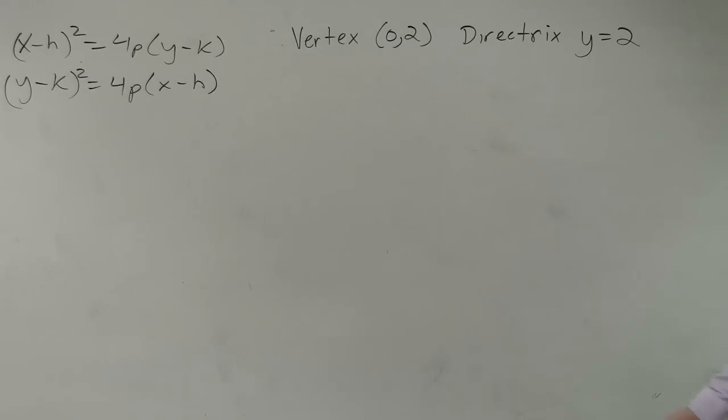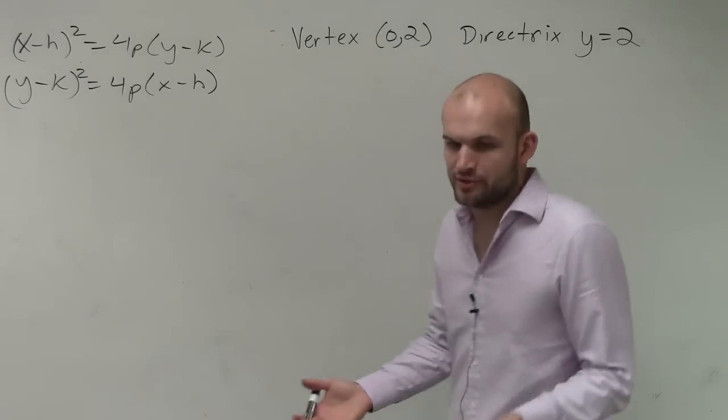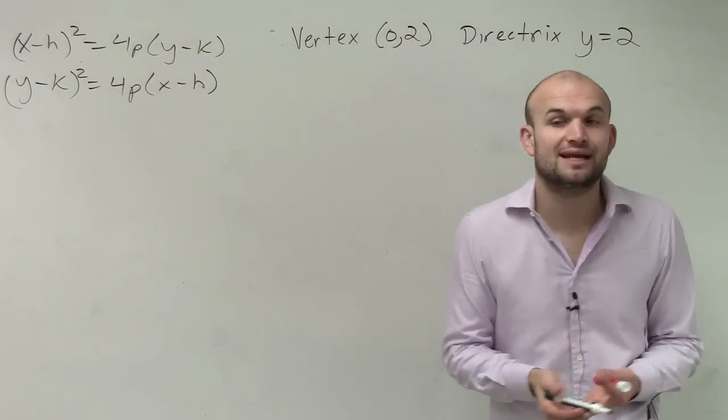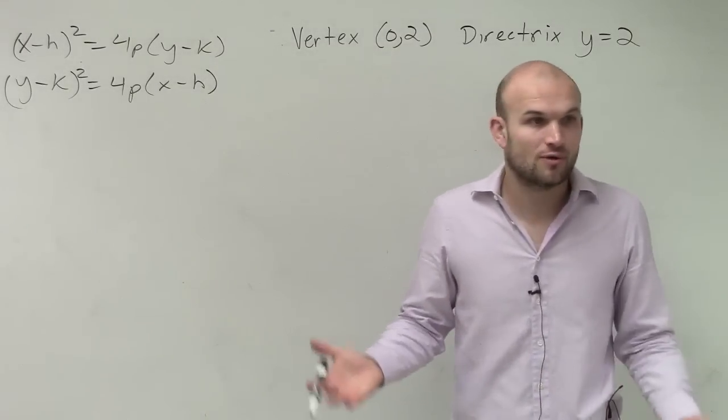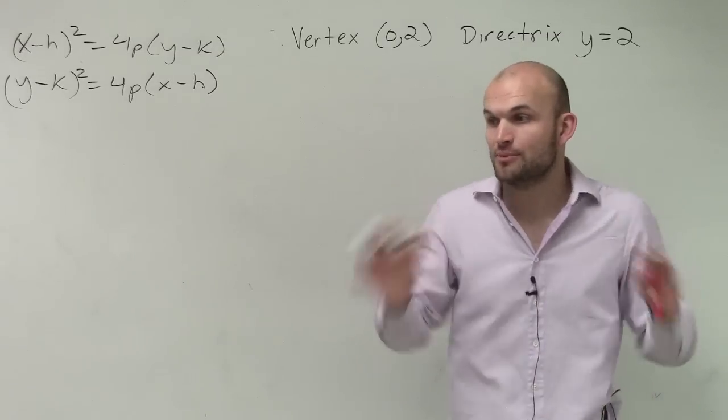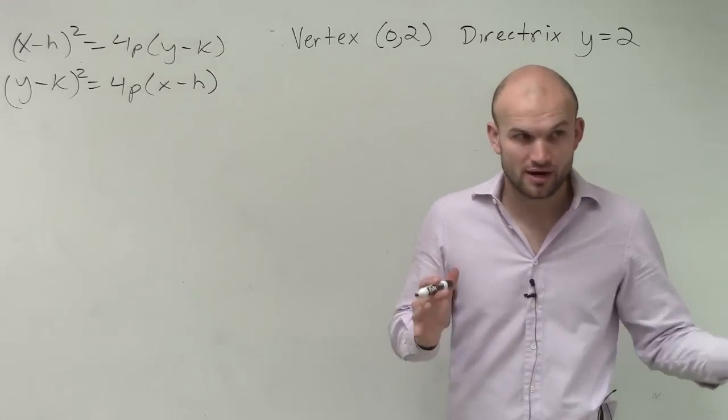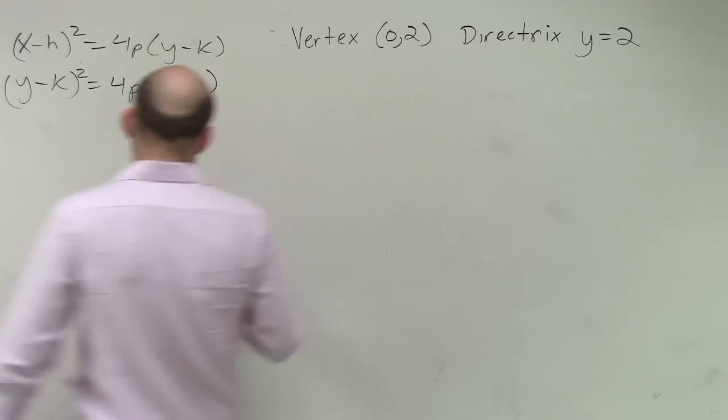So the best thing I like to do is just say, just plot what information they're giving you, right? Because remember when we were finding the directrix and the focus, the first thing I ask you is what's squared? The x or the y. When you know the x is squared, it opens up or down. When the y is squared, it opens left or right, correct?